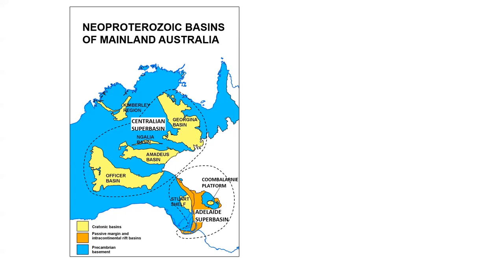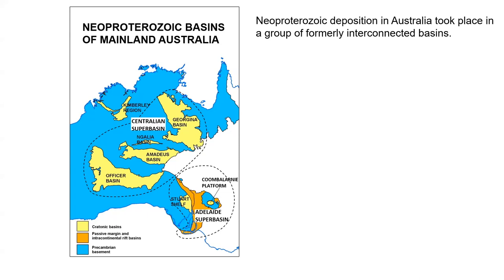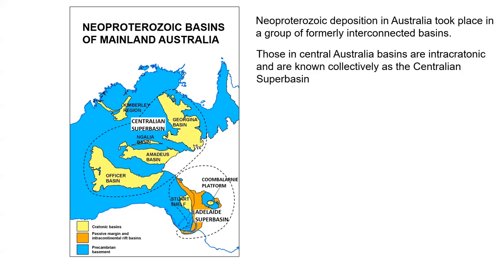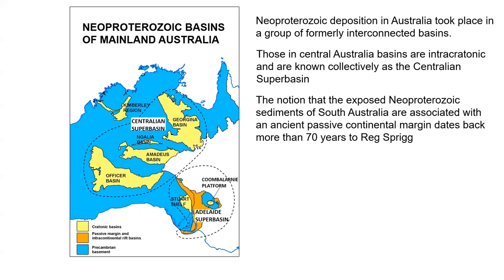Neoproterozoic basins in Australia include a whole lot that occupy the central part of the continent. These were formerly interconnected and we refer to them collectively as the Centralian Superbasin. The notion that the exposed Neoproterozoic sediments of South Australia are associated with an ancient passive continental margin really dates back more than 70 years to Reg Sprigg in his important paper of 1952, where he referred to it as the formation of a continental terrace.